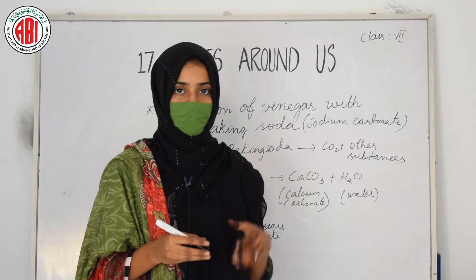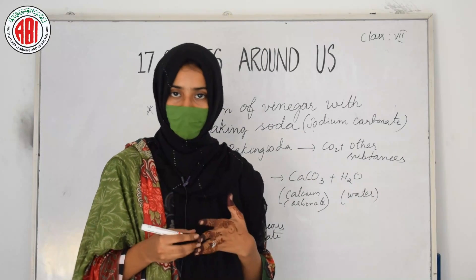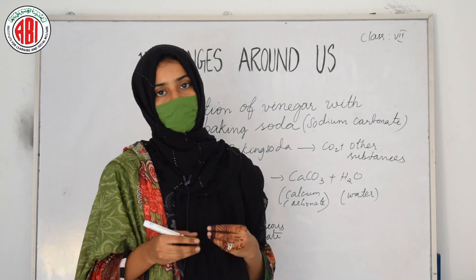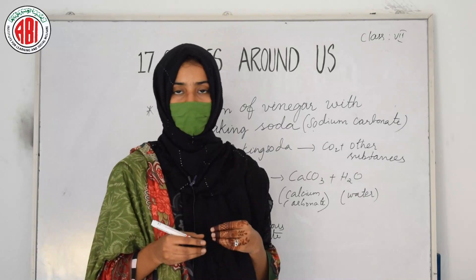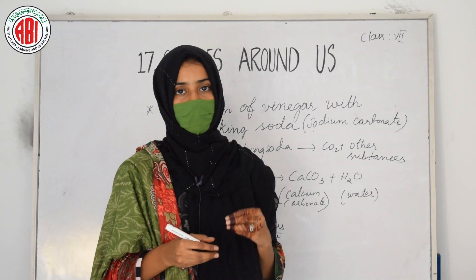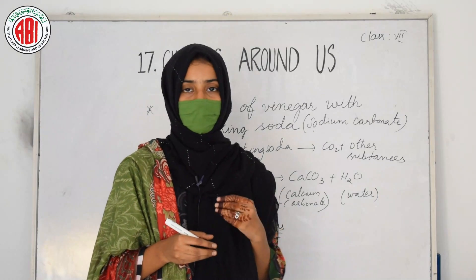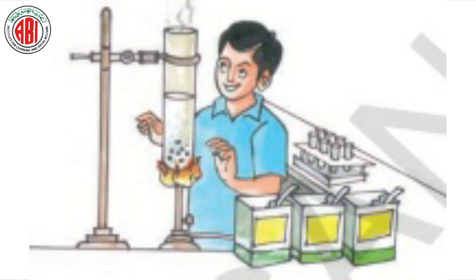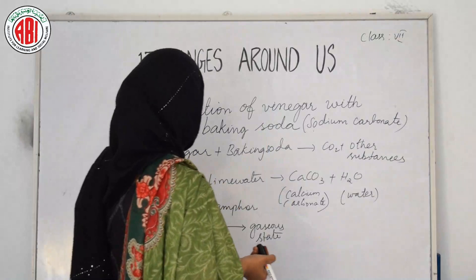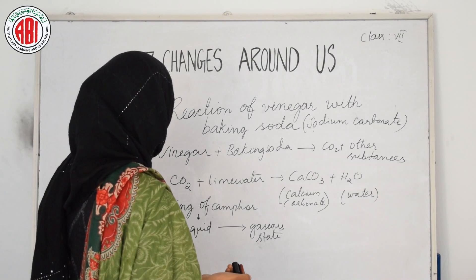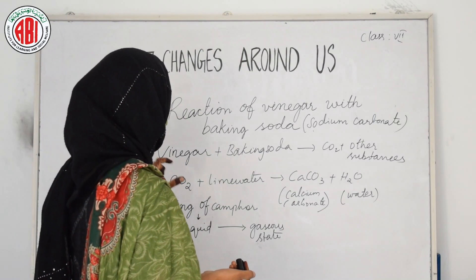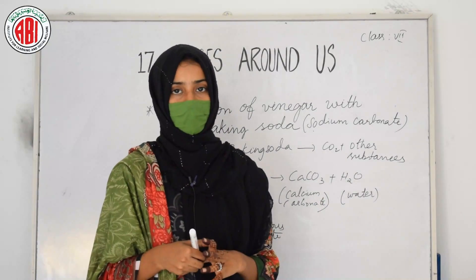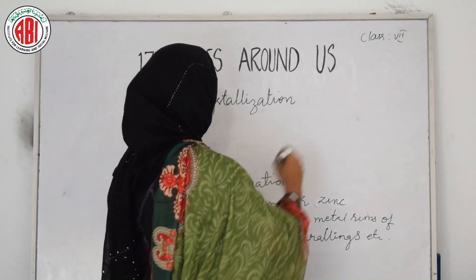The next one is burning of camphor. If we take camphor in a dish and keep it open in the air, we can sense its very strong smell, which can also be used to kill insects. When kept open it slowly evaporates into the air. When we burn the camphor, it first changes into liquid form, then that liquid slowly evaporates into the air in a gaseous form. So camphor on burning first forms a liquid, then that liquid evaporates into the atmosphere. This is also a chemical change.